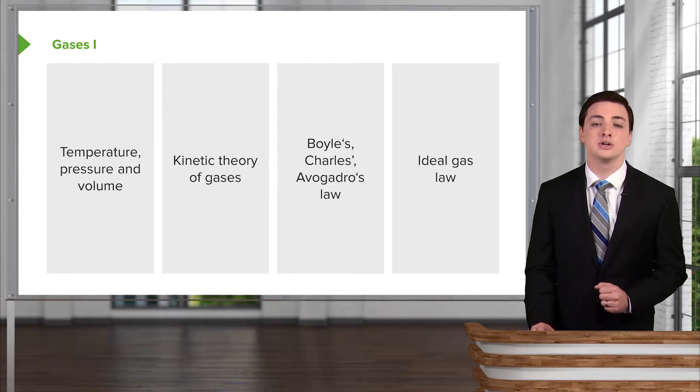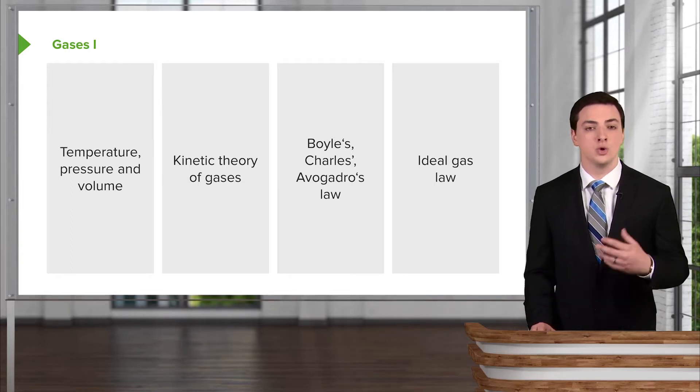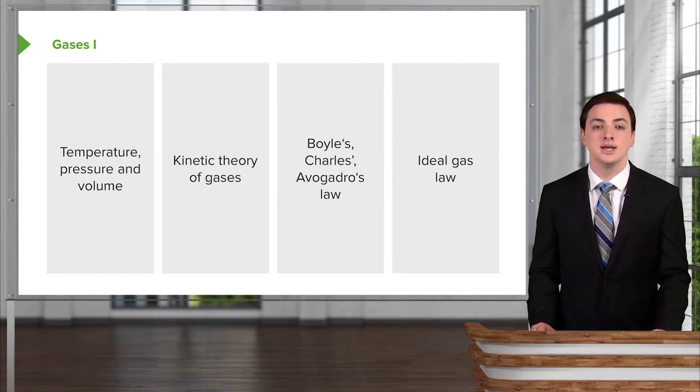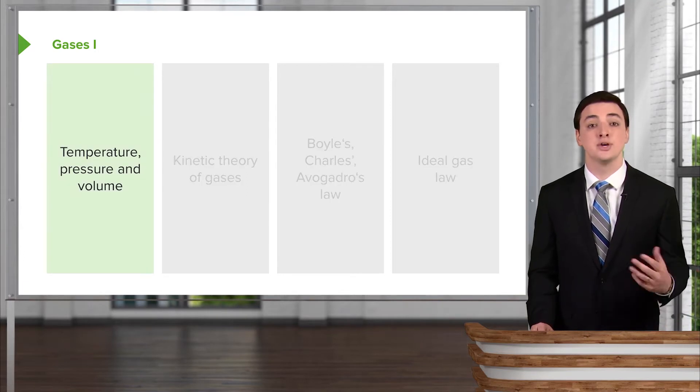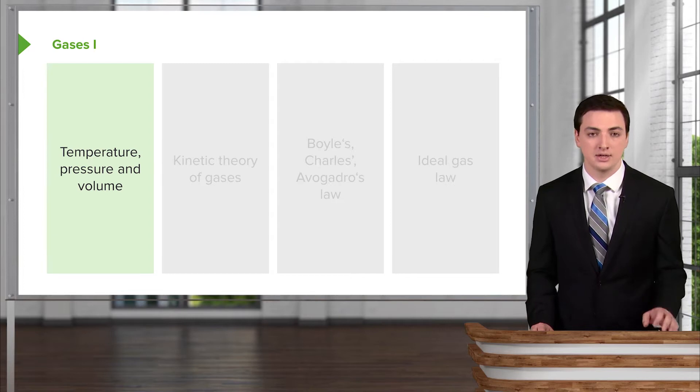We'll cover Boyle's, Charles, and Avogadro's law and the way that they came up with these laws. And then finally, the ideal gas law, which is a combination of these and how to use it as well. Starting with the basic measurables, the measurable properties of gases.